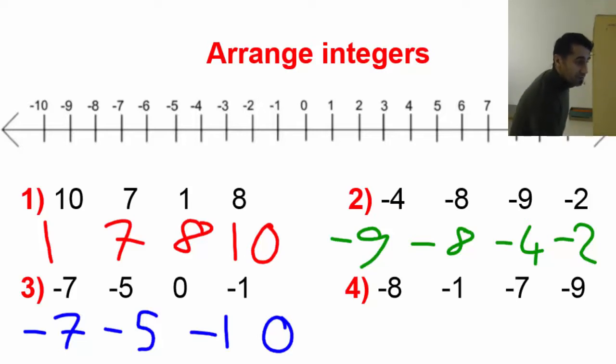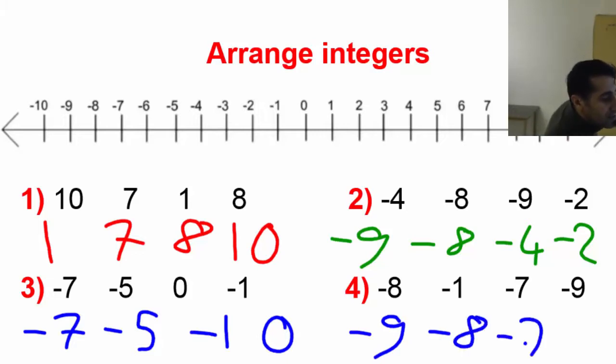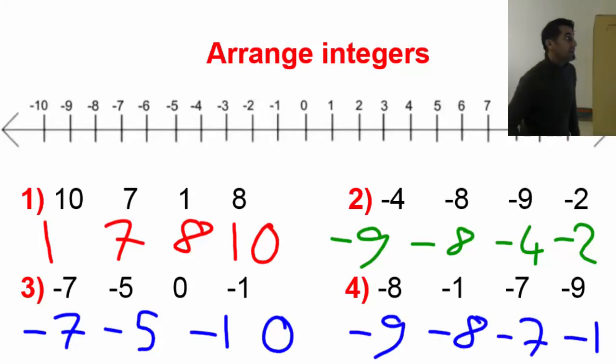And negative 1 is the greatest in value, but negative 9 is the lowest, negative 8, negative 7, and negative 1.